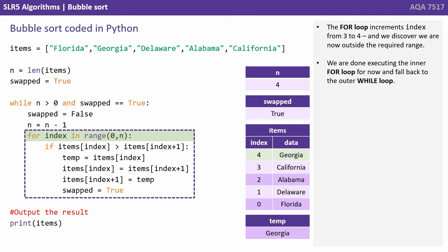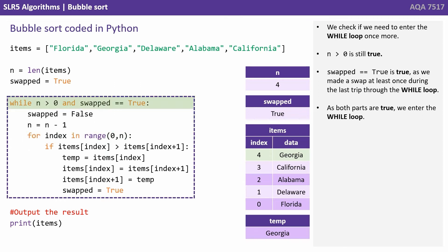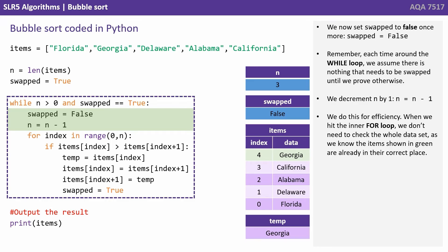The for loop increments index from 3 to 4, and we discover we're now outside the required range. We are done executing the inner for loop for now and fall back to the outer while loop. We check if we need to enter the while loop once more. n is greater than 0 is still true because n is 4. Swapped equals true — we made a swap at least once during our last trip through the while loop. Both parts are true, so we enter the outer while loop again. We now set swap to false once more. Remember, each time around the while loop we assume there's nothing that needs to be swapped until we prove otherwise. And we decrement n by 1, so that's now 3.